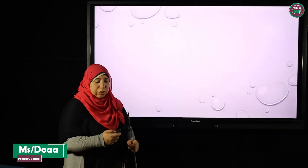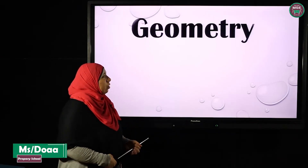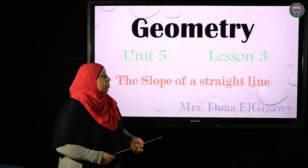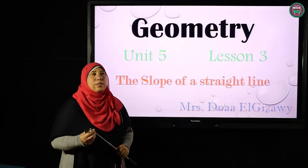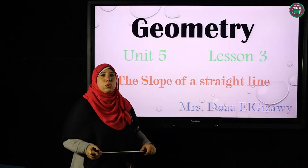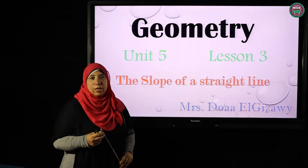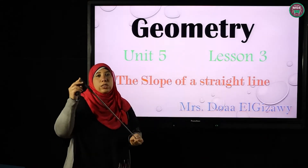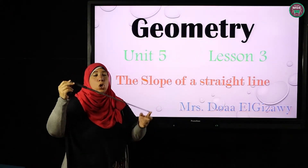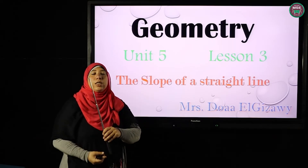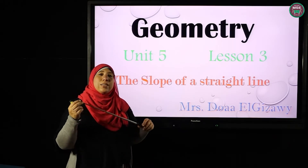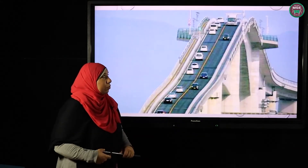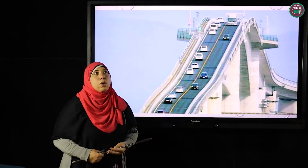Dear third prep, today we will explain a new lesson, which is Unit 5, Lesson 5. Our lesson is the slope. The slope of a straight line describes the shape of the straight line — how we draw it or what it looks like. I can draw a straight line with a slope in one direction, or in the other direction, or a horizontal straight line, or a vertical straight line. Each straight line has a different slope. We use the slope in making bridges, stairs, or inclined roads, for example.